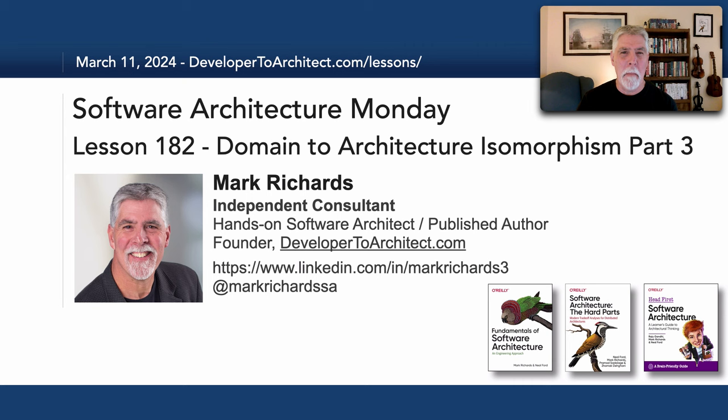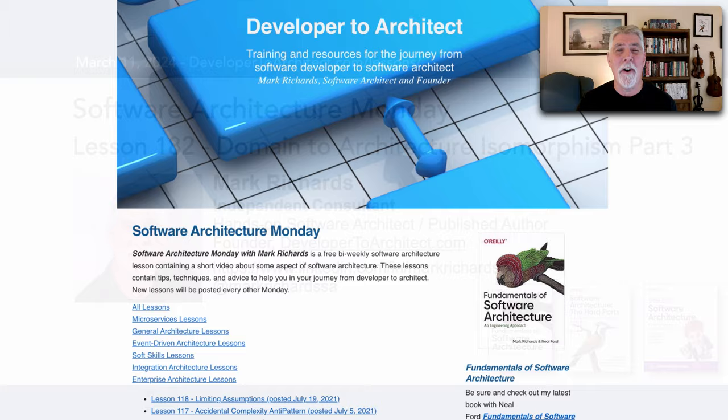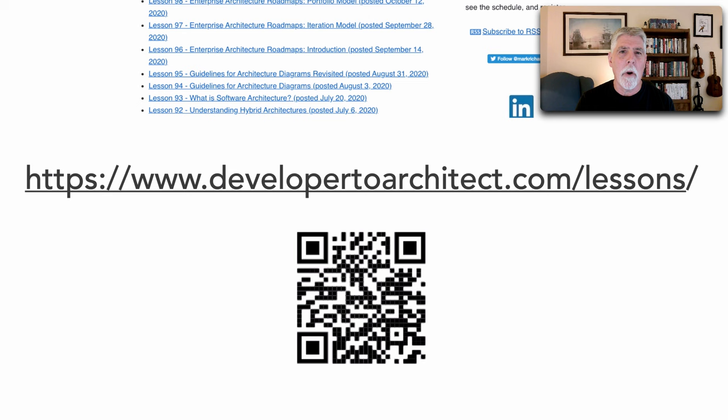Hello everyone and welcome to Software Architecture Monday. My name is Mark Richards and in this lesson number 182 we'll take a look at the last part three of Domain to Architecture Isomorphism, where we will essentially bring together the issues from lesson 179 with the shape of the architectures from lesson 180. You can get a listing of all the lessons at developer2architect.com/lessons.